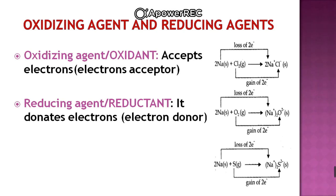Moving on to oxidizing agents and reducing agents. Oxidizing agents are also called oxidants, and reducing agents are also called reductants. Oxidizing agents are electron acceptors, while reducing agents are electron donors. Reducing agents reduce something and they themselves get oxidized. While oxidizing agents are accepting electrons — they are oxidizing something and they are getting reduced themselves.